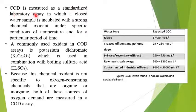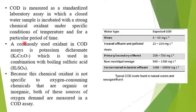COD is measured as a standardized laboratory test in which a water sample is incubated with a strong chemical oxidant under specific conditions of temperature for a particular time. The commonly used oxidant in COD testing is potassium dichromate, K2Cr2O7, combined with boiling sulfuric acid.